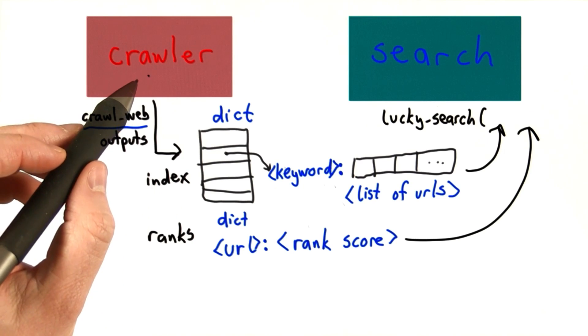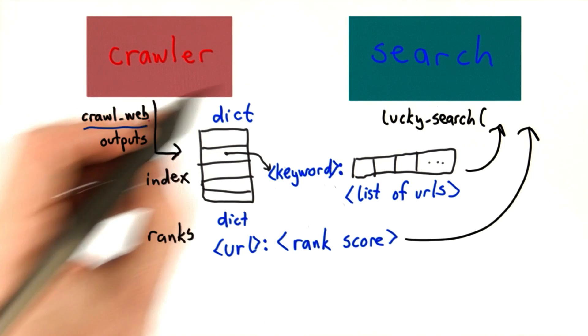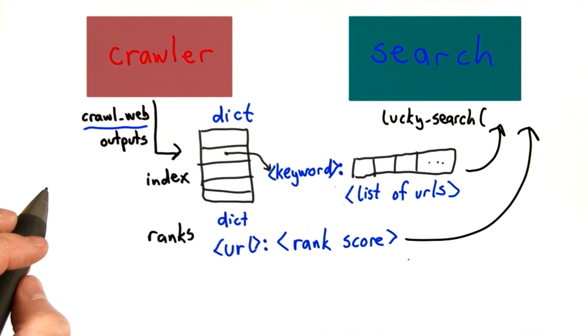If we decide to change something about the crawler, we've got to worry about all these procedures in search that use these outputs. So our goal is to hide all that complexity. In general, the way we hide things is to use abstraction.